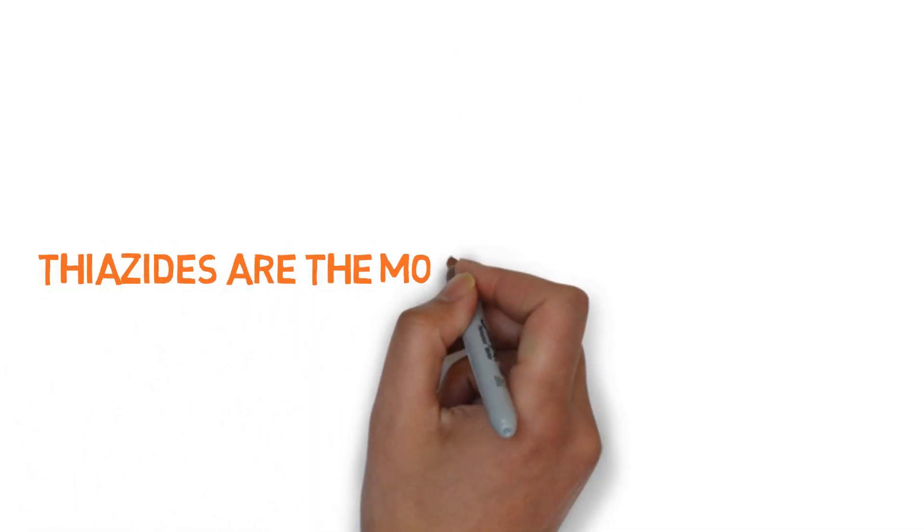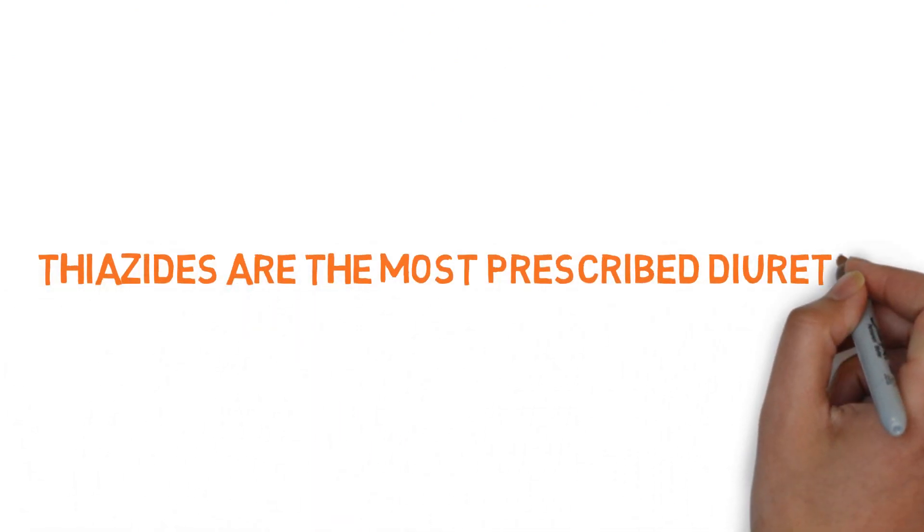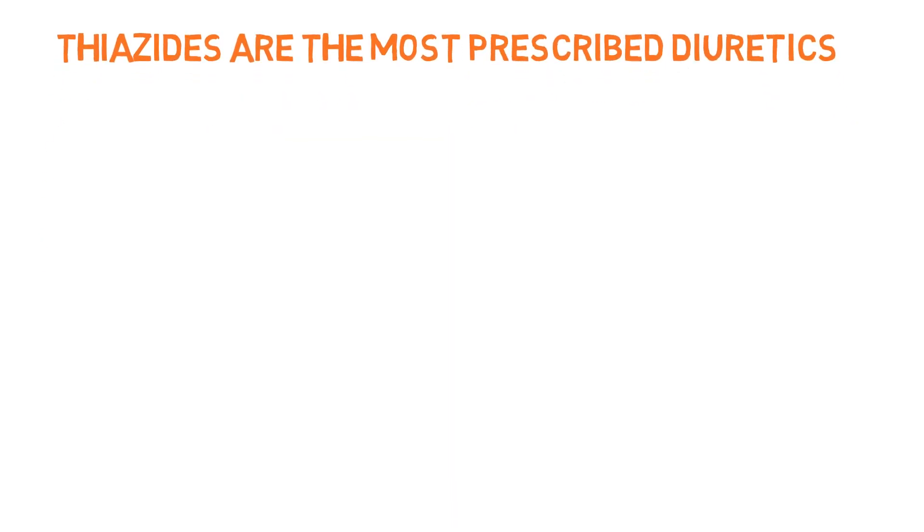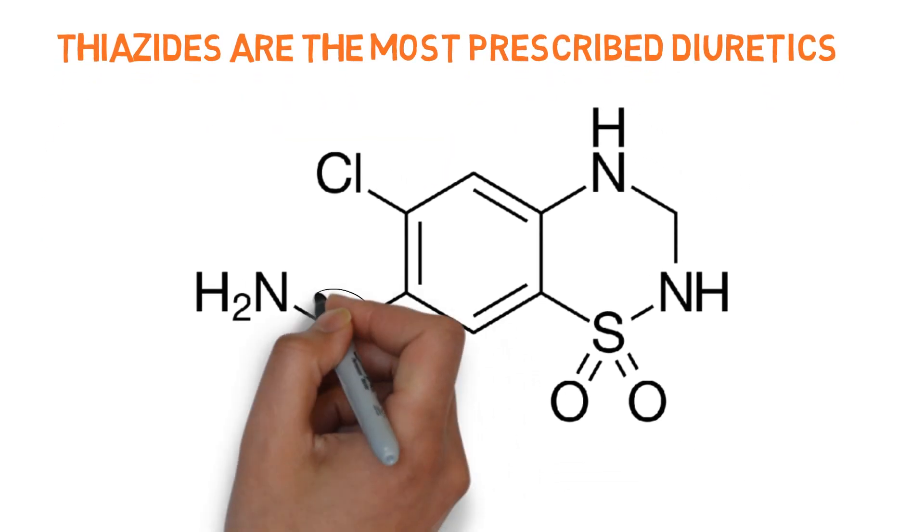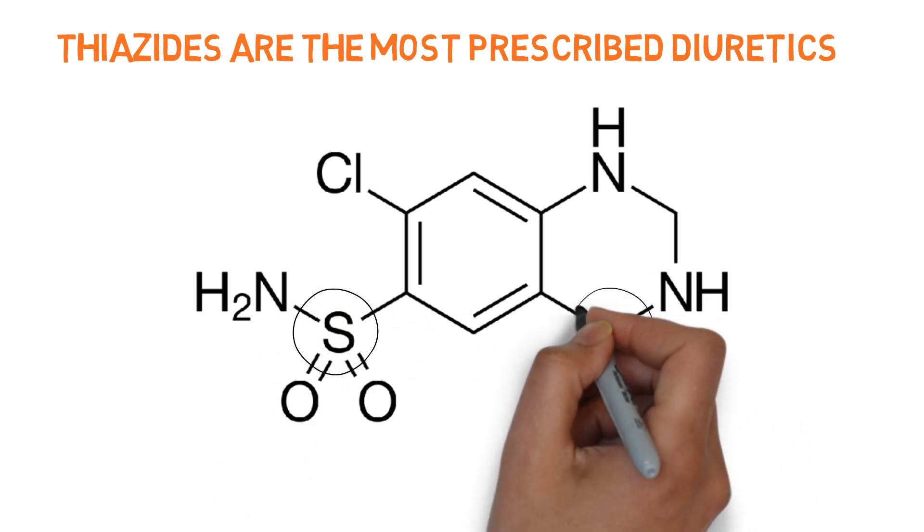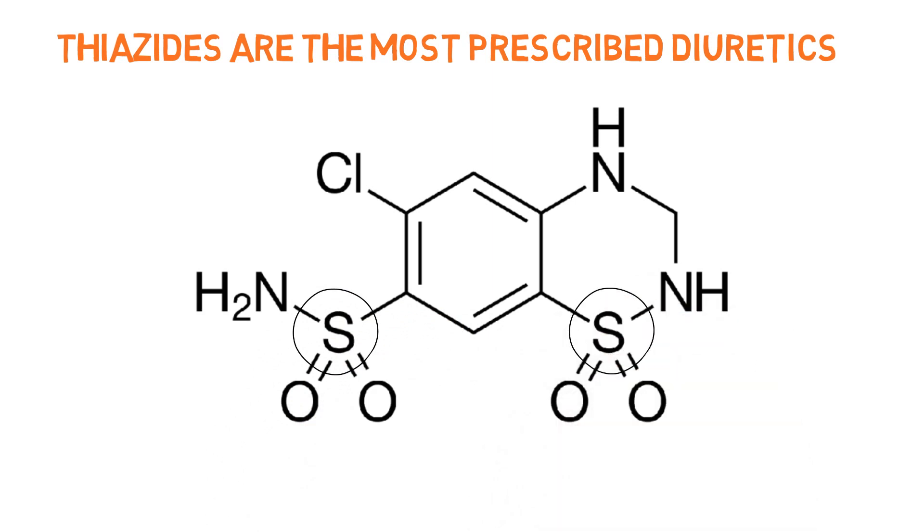Thiazides are the most widely used class of diuretics. Thiazides are called that because they contain sulfur and are sulfonamide derivatives. They are known to be moderately potent diuretics.